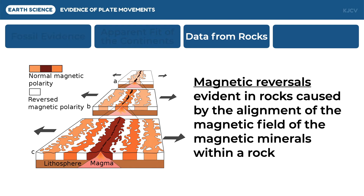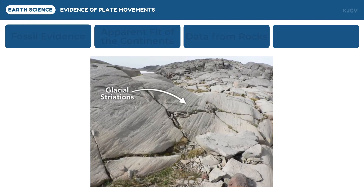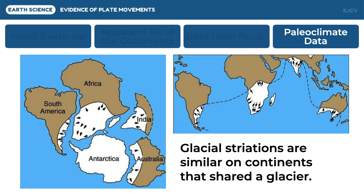Another piece of information which we can get from rocks is glacial striations. When large boulders are pulled under glaciers, glacial strips are left. They scrape the underlying surface as they pull along, forming grooves parallel to the glacier's direction of movement. This gives us the next evidence. By arranging the glacial striations, geologists were able to determine the movement of the continents as they drifted away from each other.